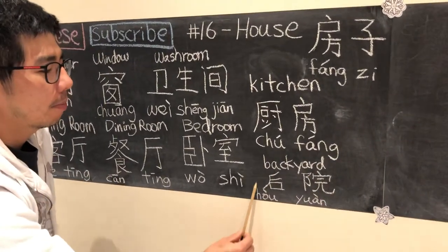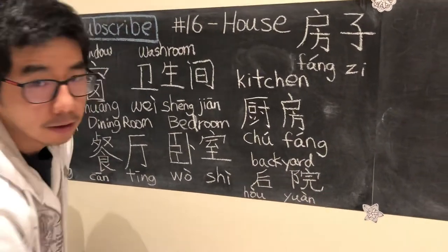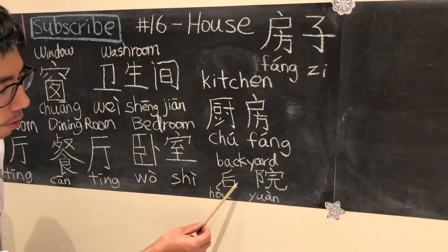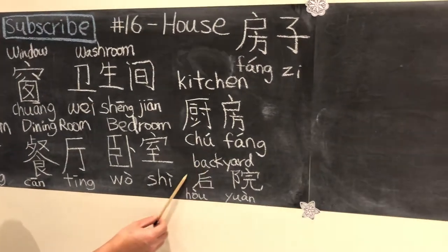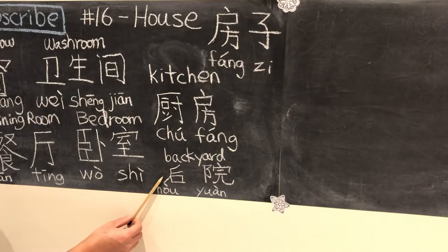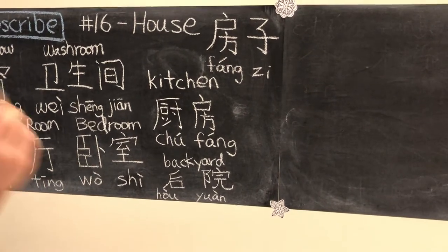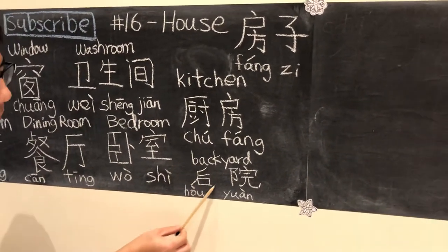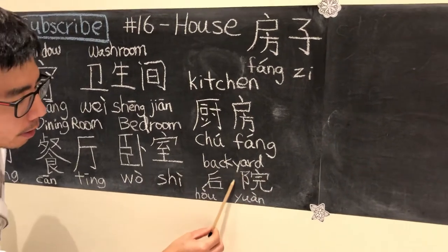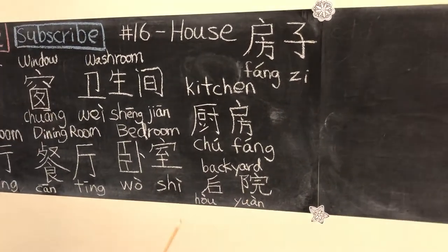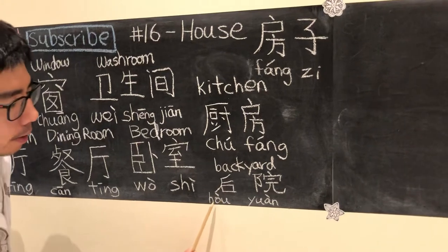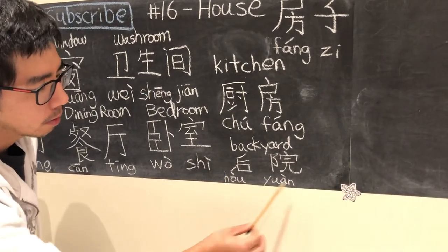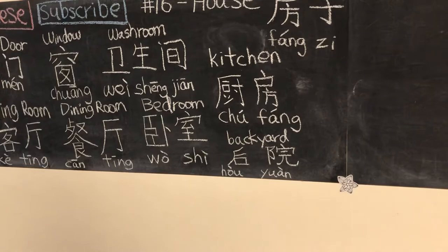Lastly, we have the backyard. Because it's in the back, the first character means back. You have 乌 and 前 — this character means the back, and the second part means more like the yard. So together they mean your backyard.